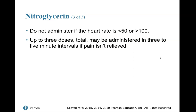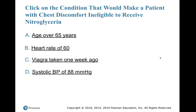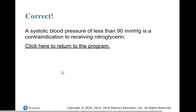A systolic blood pressure of 88 mmHg would make a patient ineligible to receive nitroglycerin — because we need a systolic of greater than 100. A systolic blood pressure of less than 100 is a contraindication to receiving nitroglycerin.